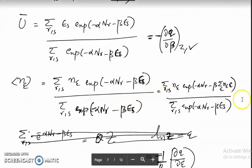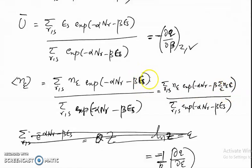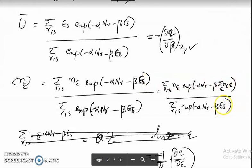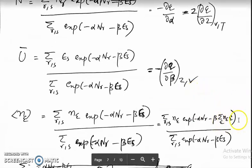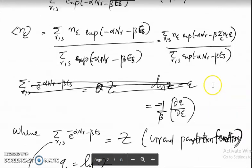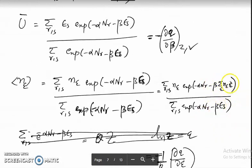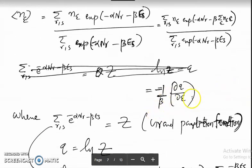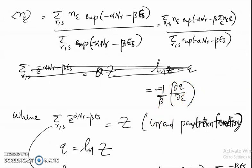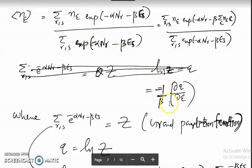When you take ∂Q/∂ε, since E_s = Σ_ε n_ε·ε, differentiating with respect to ε brings out −β·n_ε. So −(1/β)·∂Q/∂ε gives you the mean occupation number n_ε. These are the key equations for calculating the average number of particles, average energy, and mean occupation number.